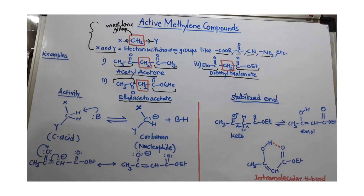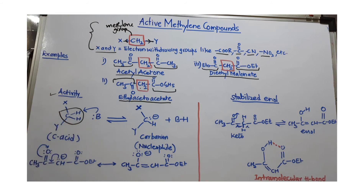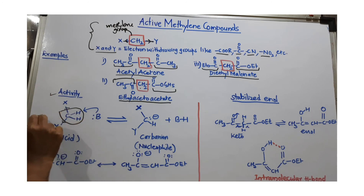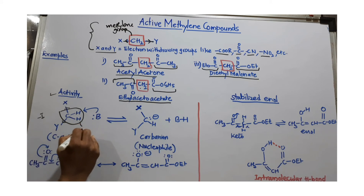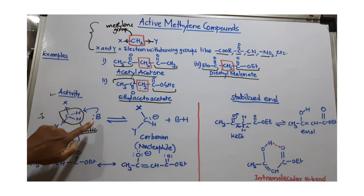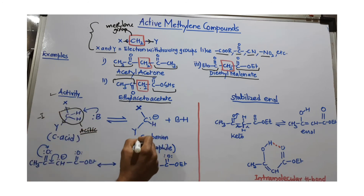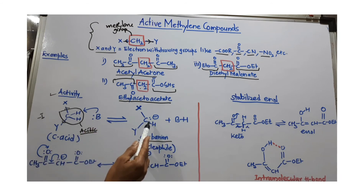Now let us discuss the activity of these methylene compounds. The methylene group in all these compounds is active. Because of the two electron withdrawing groups, there is a minus-I (inductive) effect. Due to this minus-I effect, the two protons on the methylene group are acidic protons. Since these protons are acidic, we can remove them using a base, performing an acid-base reaction to generate a carbanion. This carbanion is stabilized by resonance.